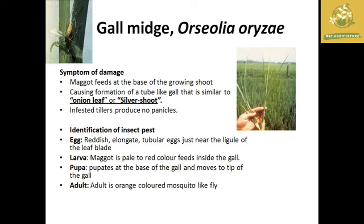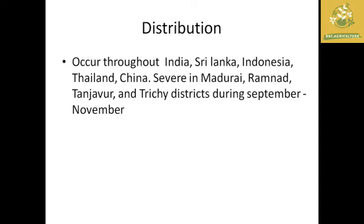The larva (maggot) is pale to red in color and feeds inside the galls. The pupa pupates at the base of the gall and moves to the tip for emergence. The adult is an orange, musky-colored, mosquito-like fly. Distribution: mainly in India, Sri Lanka, Indonesia, Thailand, and China. In Tamil Nadu, it is found in Madurai, Thanjavur, and Trichy districts during September to November.